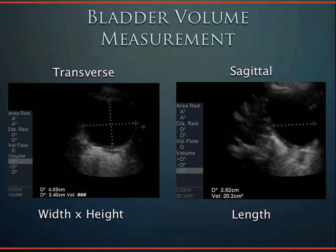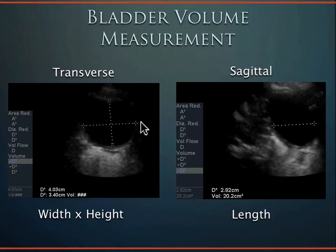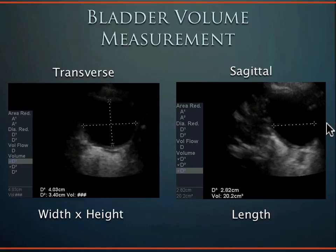You can estimate bladder volume using the equation: width × height × length. In the transverse plane, measure width (patient's right to left) and height (anterior to posterior) with calipers. Then unfreeze, rotate to sagittal plane, and measure the length — note that what appeared as width in transverse now appears as length in sagittal. Multiply all three values for the volume. Some machines can lock in values and calculate automatically.